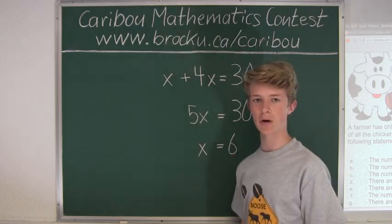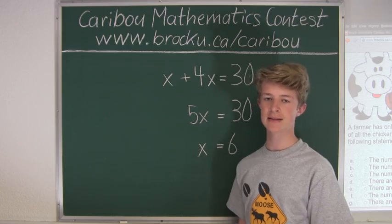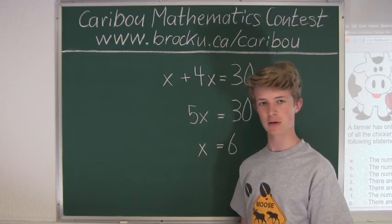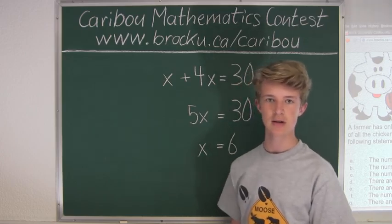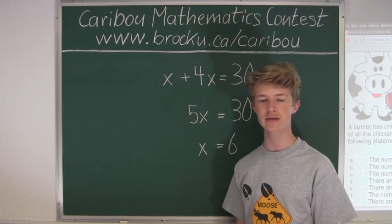So we know the number of cows is six. And since we know that there are 30 animals in total, 30 minus six means that there are 24 chickens. So we know that there are 24 chickens and six cows.